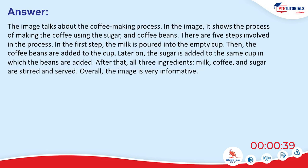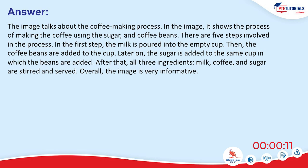The image talks about the coffee making process, showing how to make coffee using sugar and coffee beans. There are five steps involved. In the first step, milk is poured into an empty cup. Then, the coffee beans are added. Later, sugar is added to the same cup. After that, all three ingredients — milk, coffee, and sugar — are stirred and served.